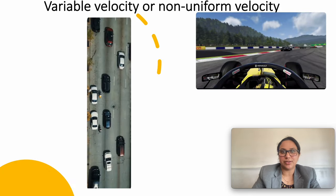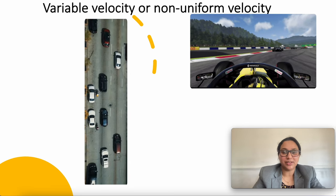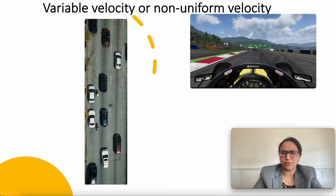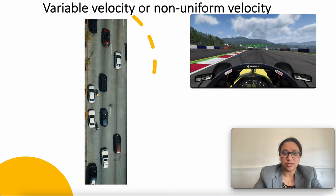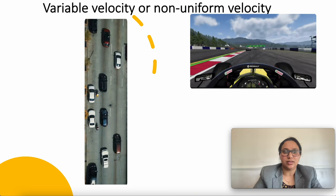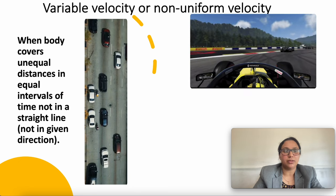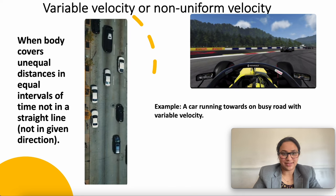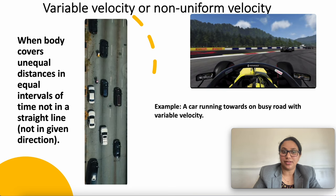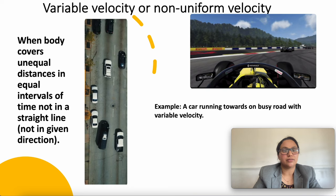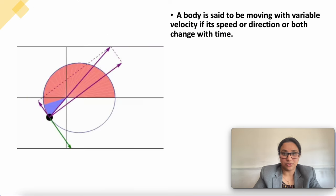Next is variable velocity or non-uniform velocity. If we are travelling to Delhi and due to road work or any other reason there is heavy traffic, we are not able to travel in a straight line direction and the speed doesn't remain the same. When a body covers unequal distances in equal intervals of time, the body is said to be moving with non-uniform velocity. A body moves with non-uniform velocity if its speed, direction, or both change with time.